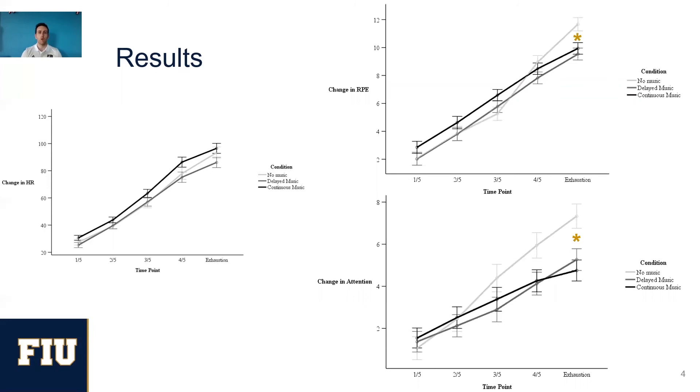When we take a look at attention and RPE, we see that attention, especially as they approach exhaustion, does significantly deviate from the other groups for continuous music and delayed music, separating itself from no music. So no music had the highest RPEs and also the most associative attention. So music was successful in assisting the dissociative attentional strategy and therefore reduced RPE. And that was significant at exhaustion for both RPE and attention, but not at the four fifths mark for attention, although it looks like there's some separation there.